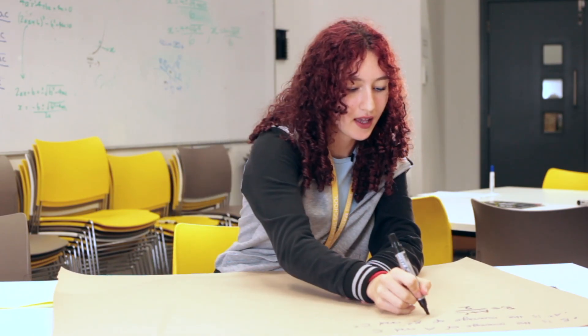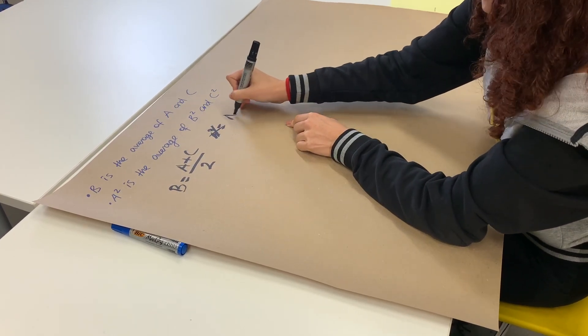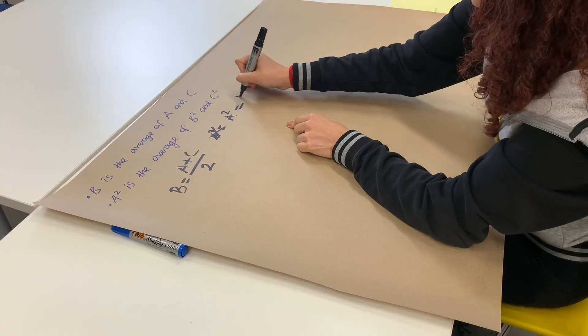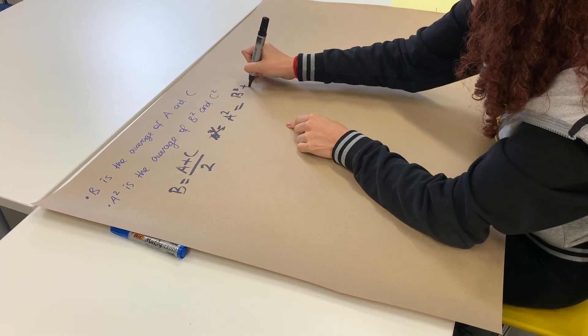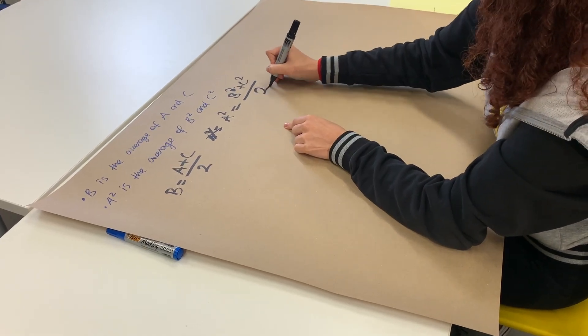We can do a similar thing on the second bit where we say A squared is equal to B squared plus C squared. That is a square, by the way, if you can't tell, over two.